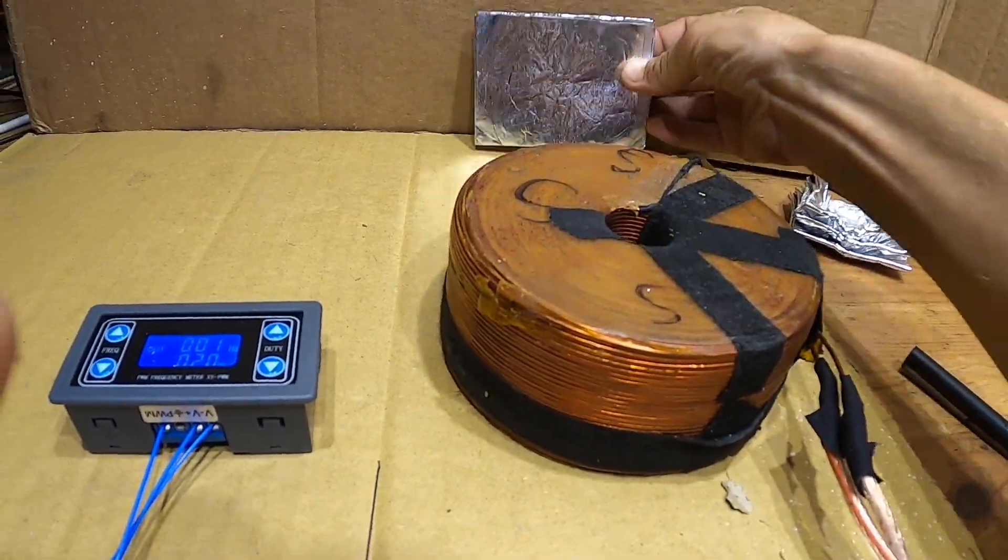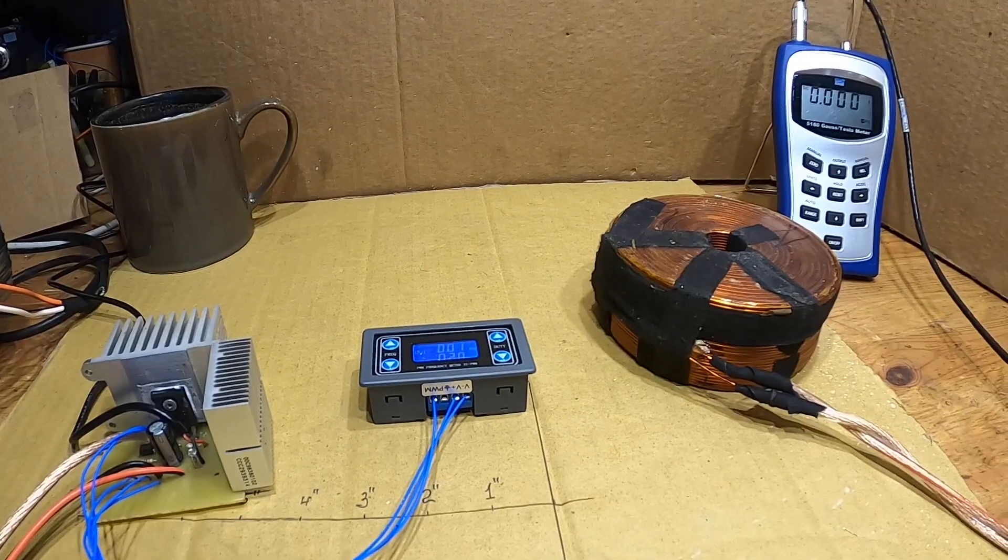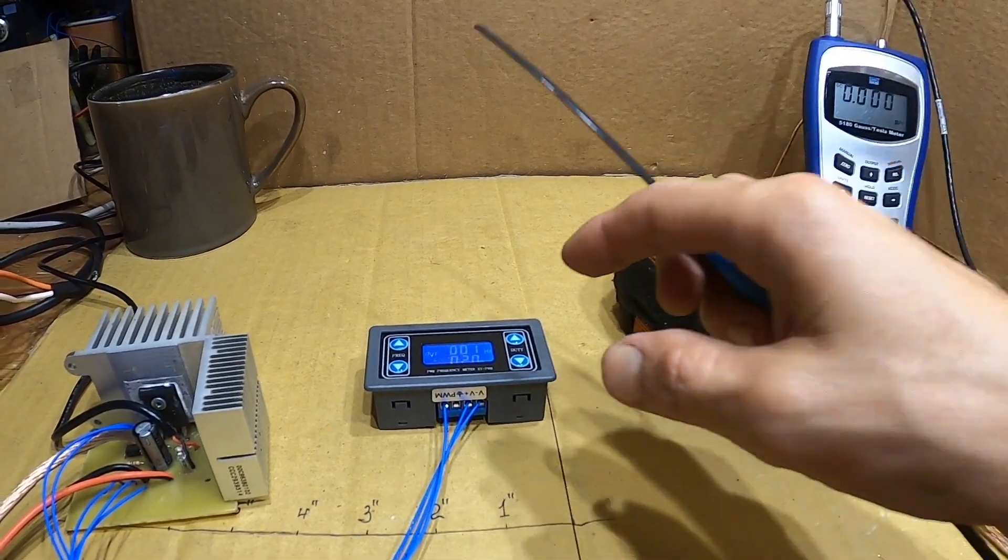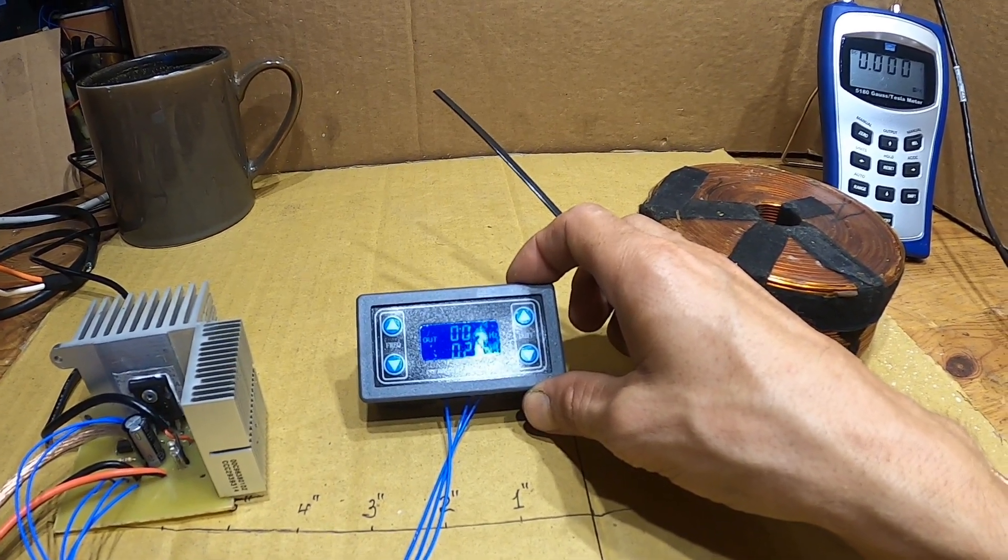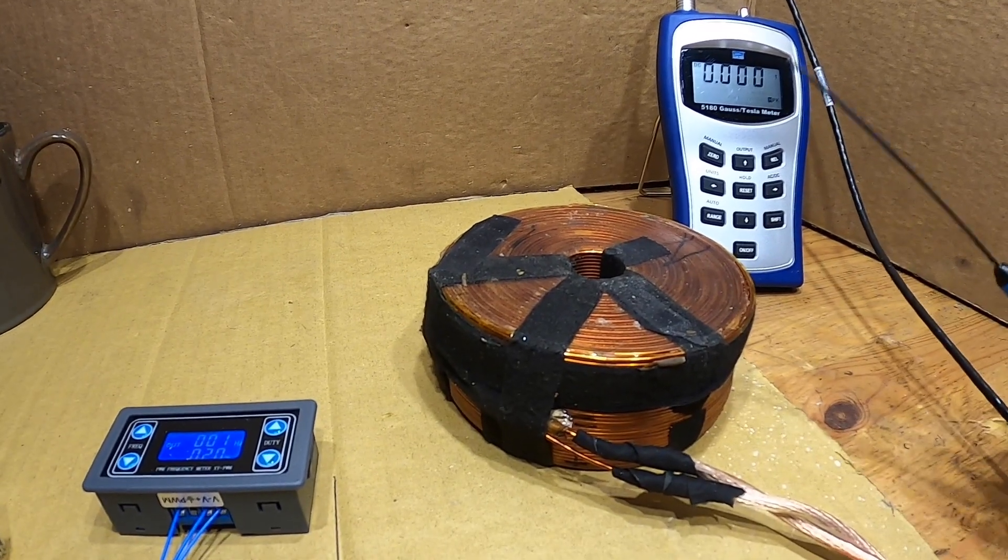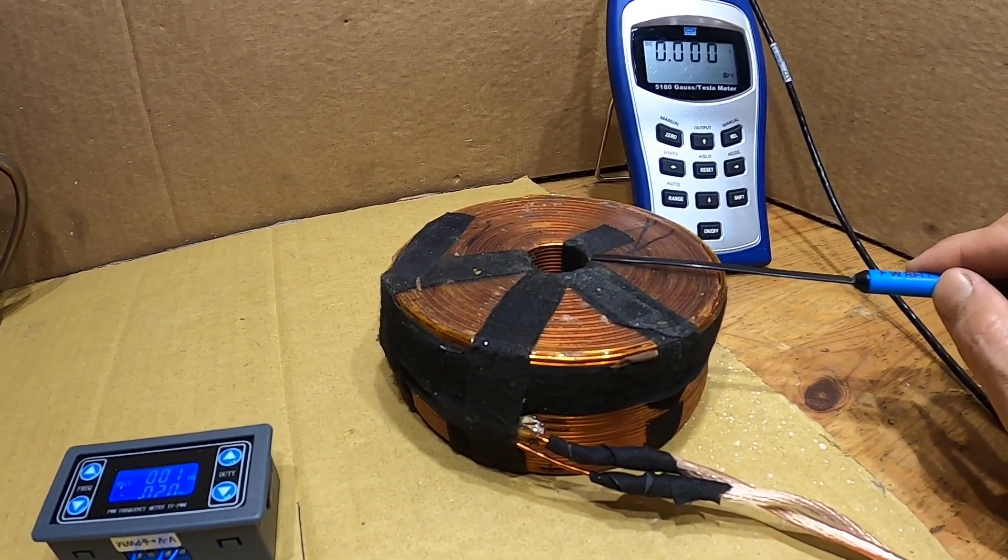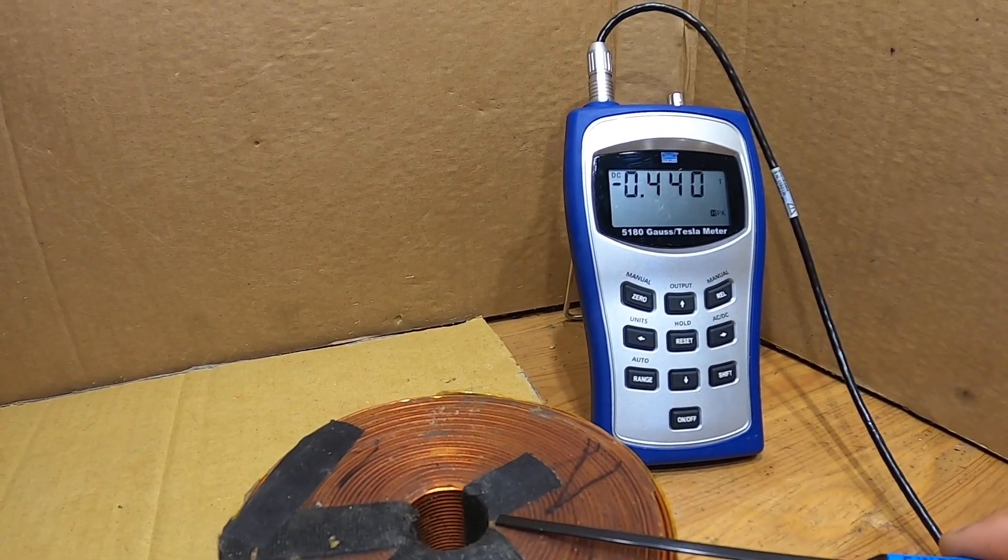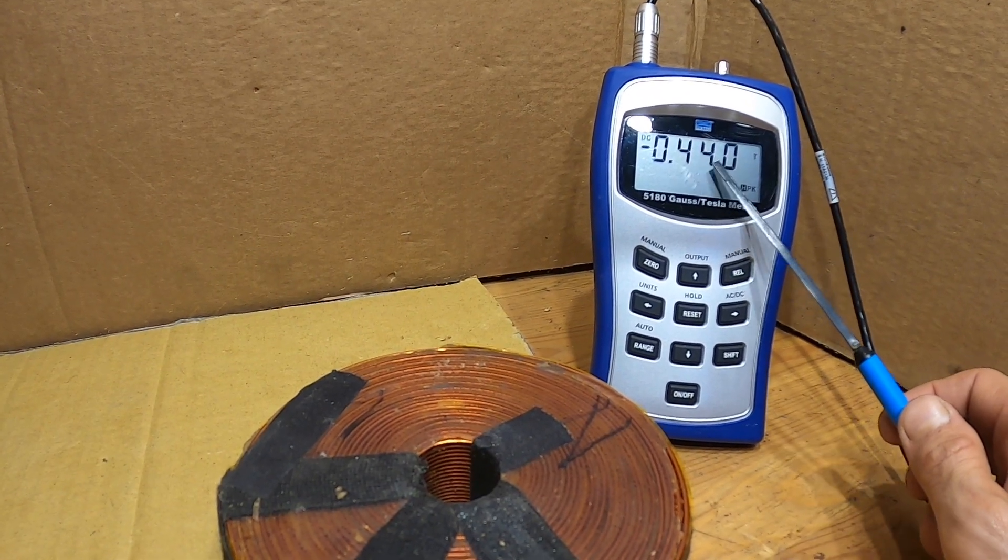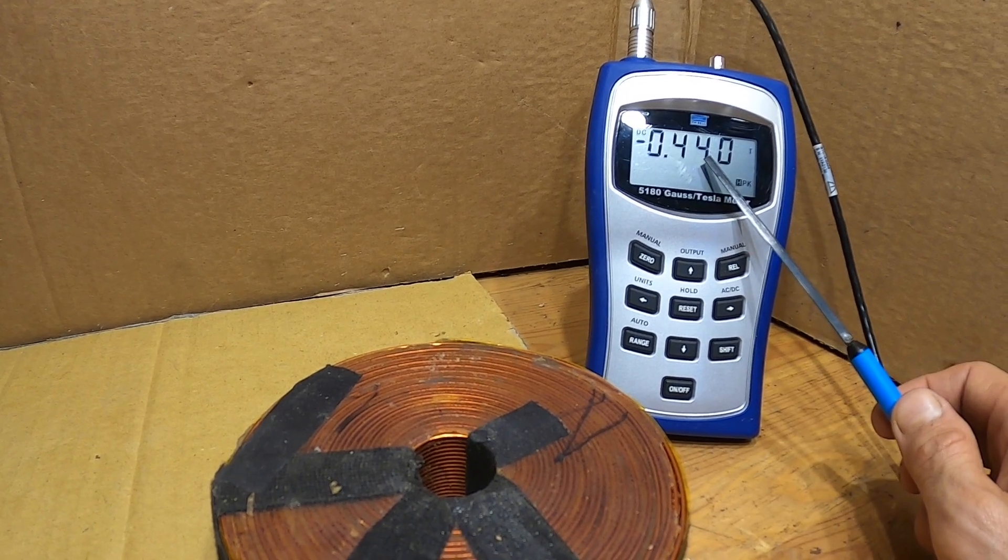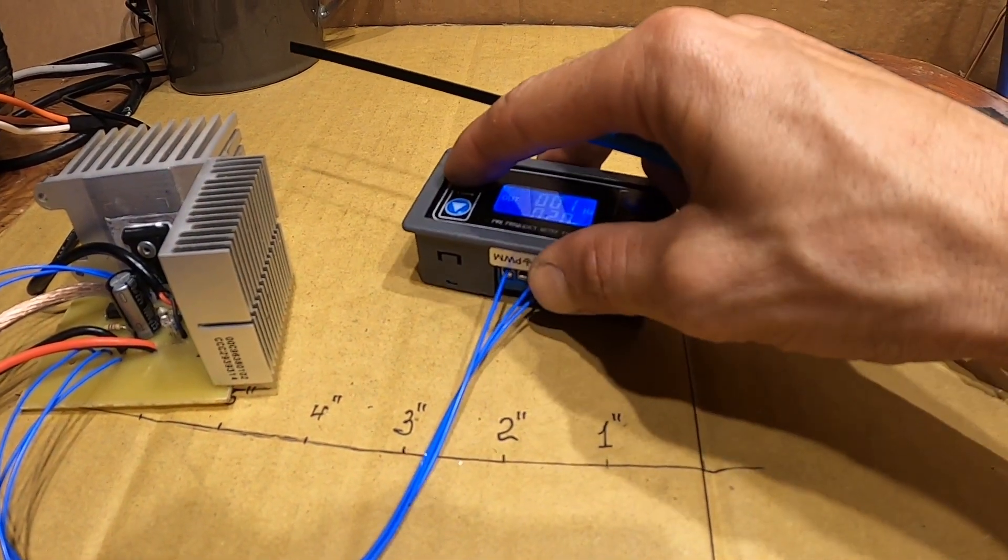All right guys, let's take some measurements so we know where we at. First measurement will be taken at one Hertz frequency, 20% duty, and my Tesla meter ready to go. Here's my probe. On the count, one, two, three. All right, so we're getting 0.44 Tesla, that's four thousand four hundred gauss, that's at one Hertz.